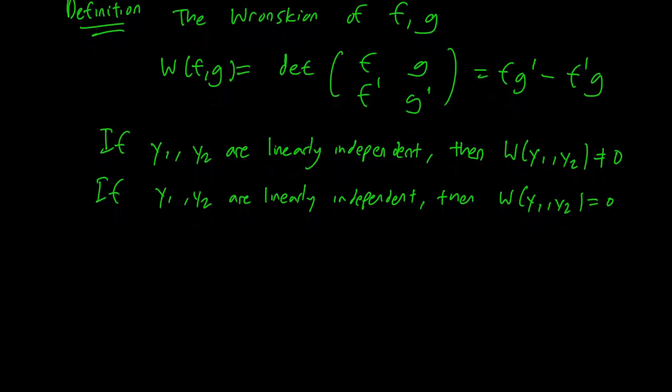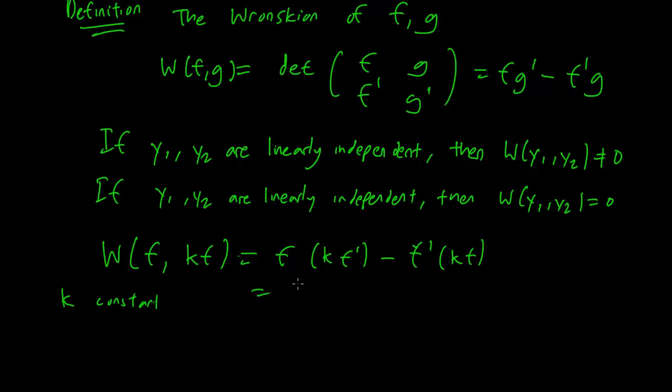Okay, and this is just a very simple test and I think it's pretty easy enough to just check why this is true. Let's look at an example where the two functions are obviously not linearly independent. Let's look at f and kf where k is a constant. What do you get? The Wronskian is going to be f times kf' minus f' times kf. This is just going to be kff' minus kff', which is going to be zero.